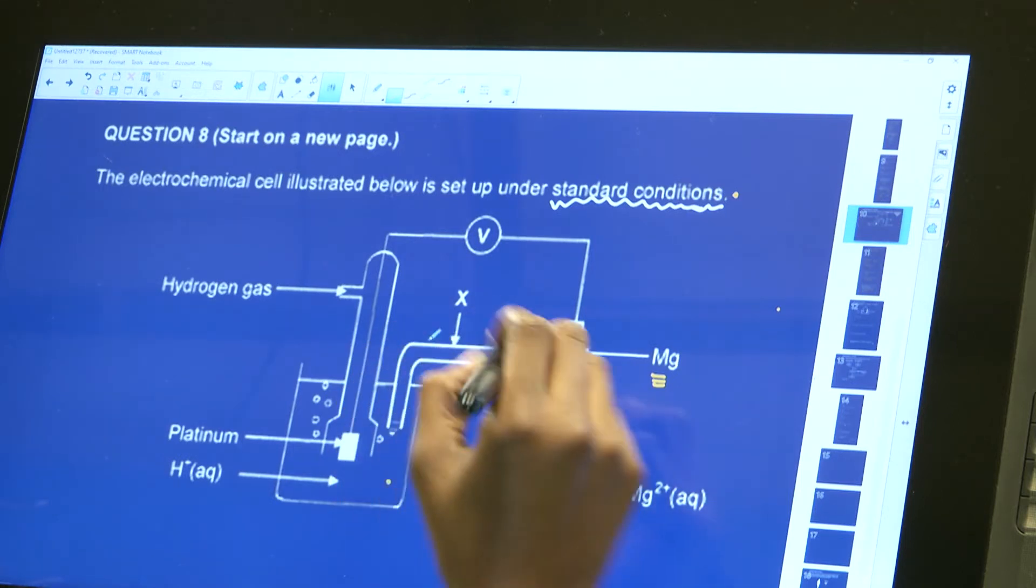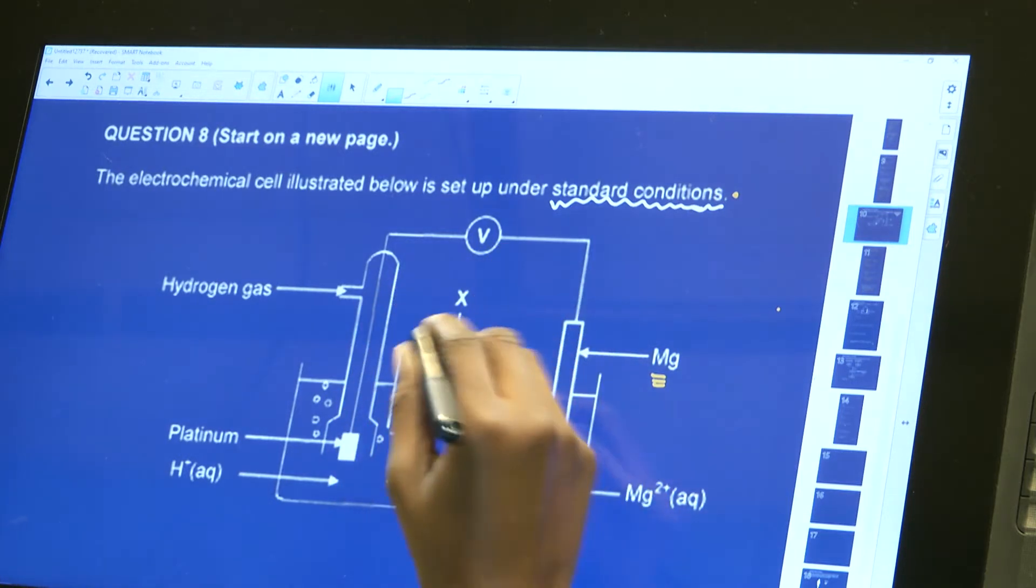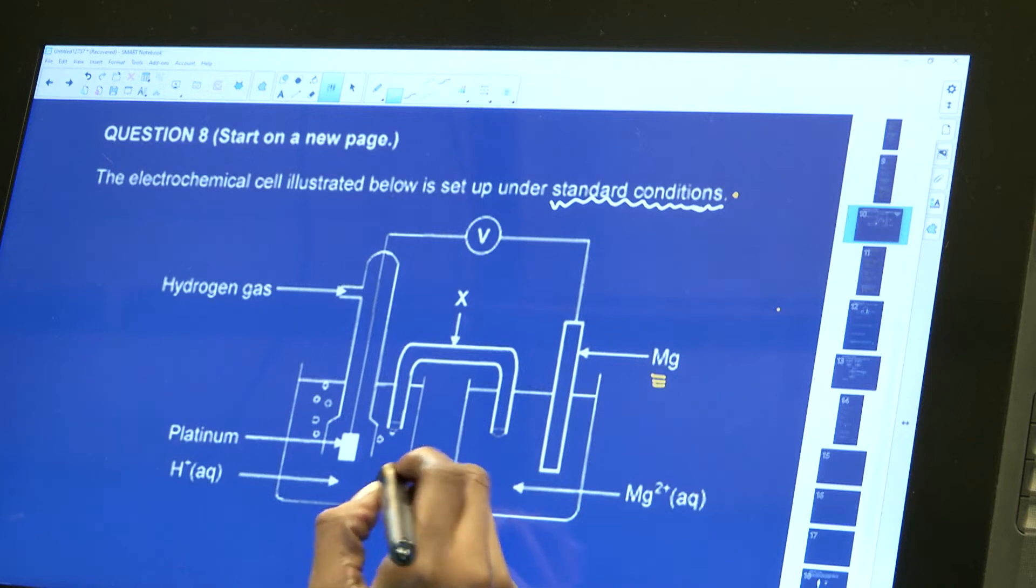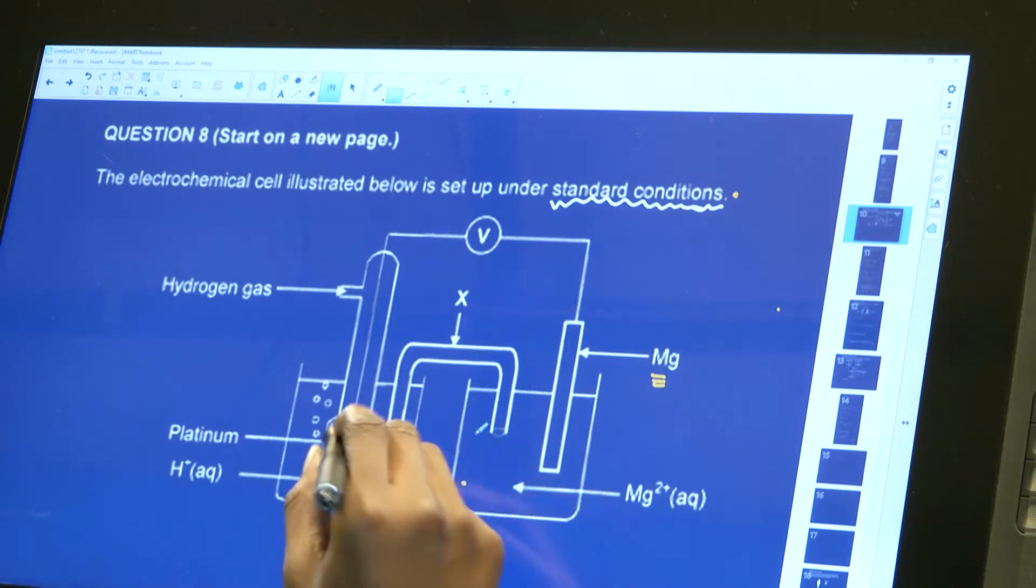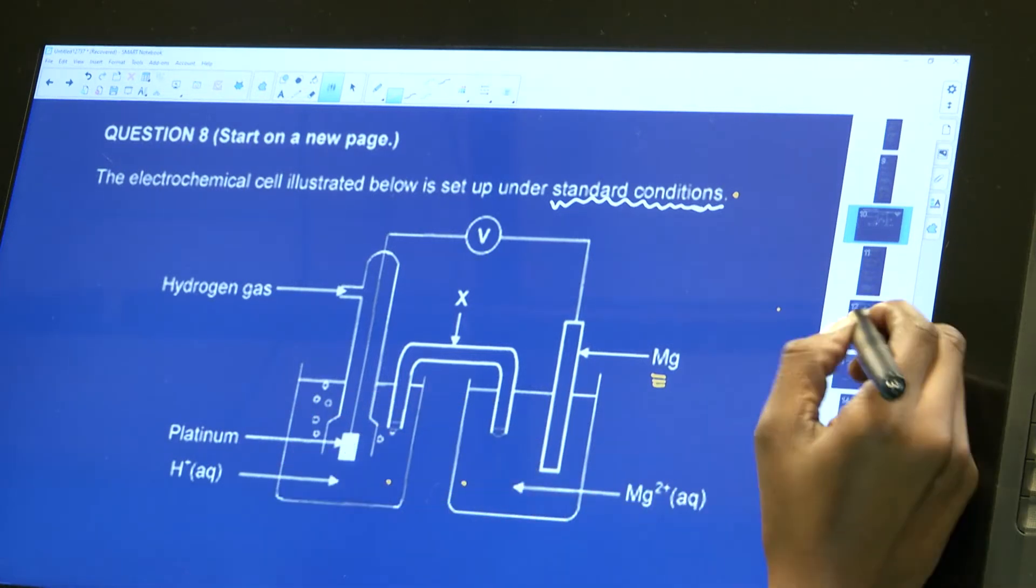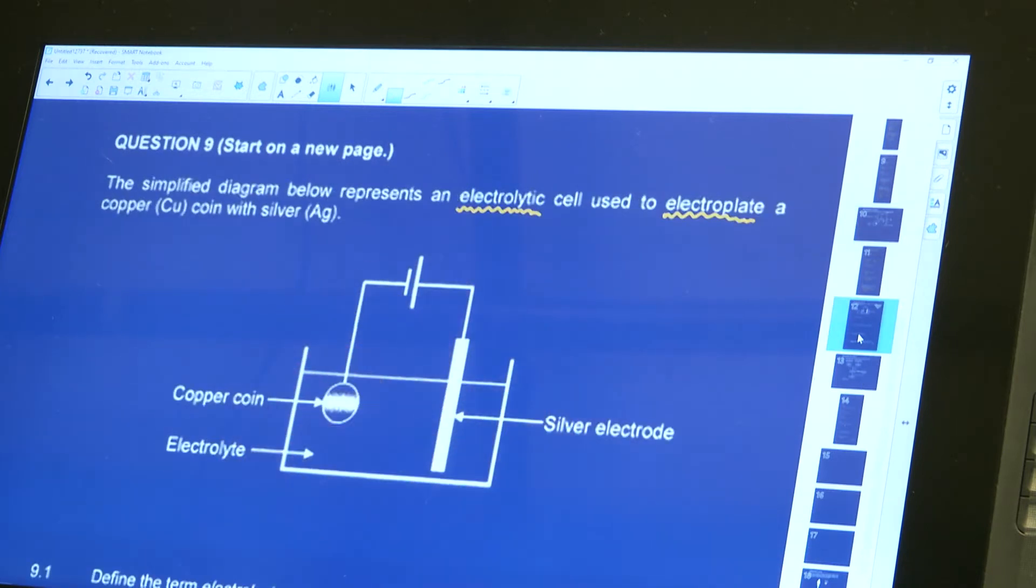When we talk about a galvanic or voltaic cell, we need a salt bridge which provides a pathway for the ions and ensures electrical neutrality. We've also got two solutions, two beakers with different solutions. Whereas if you look at this question, everything is in one beaker.